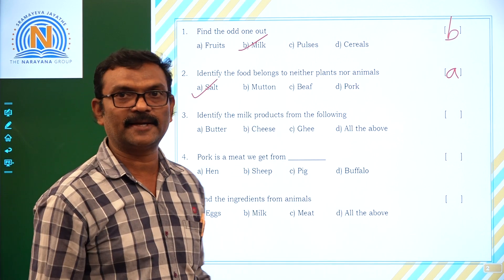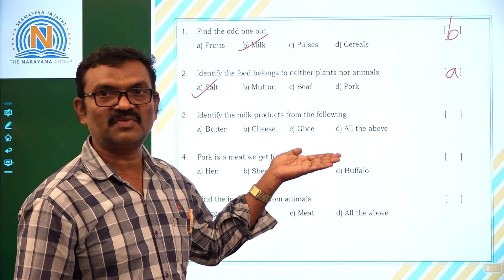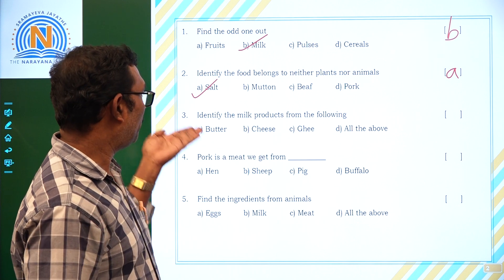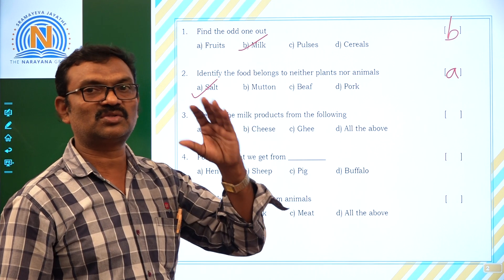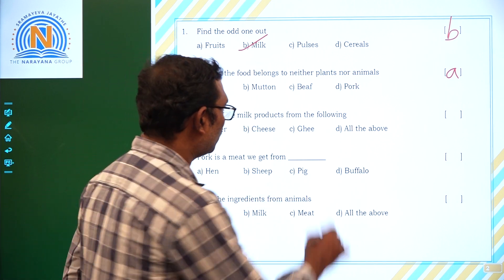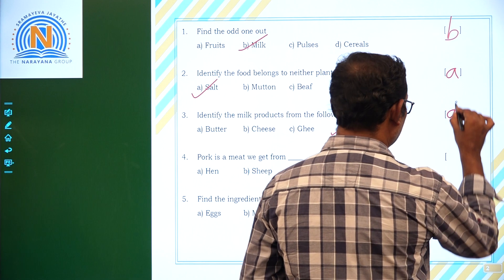Identify the milk products from the following. Here are some of the options given. Let us examine them. Butter, cheese, ghee, all the above. Yes, butter, cheese, ghee, these are all belongs to milk products only. That's why option D is correct answer.